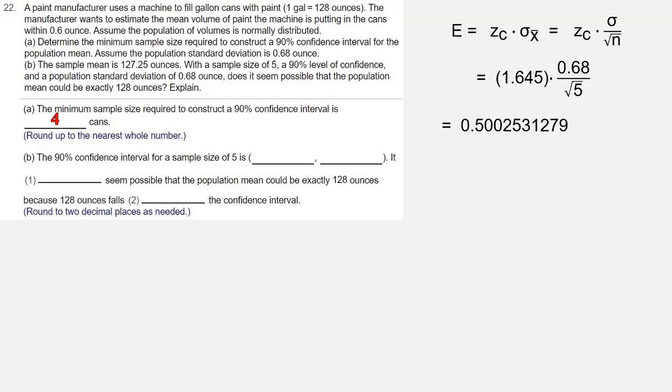When we multiply this out, we get 0.5002531279, and we're going to round that off to two decimal places, which is 0.50. Now that we have our error, we can compute our confidence interval by doing x bar minus the error and x bar plus the error.